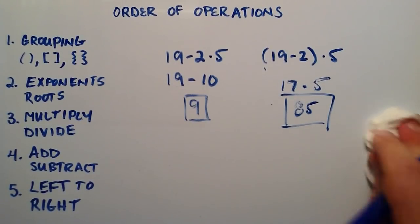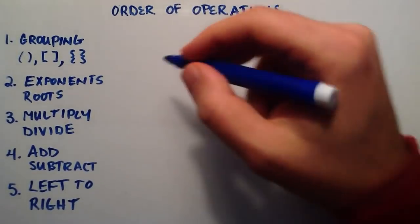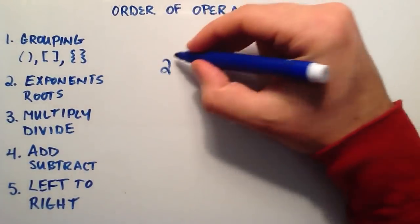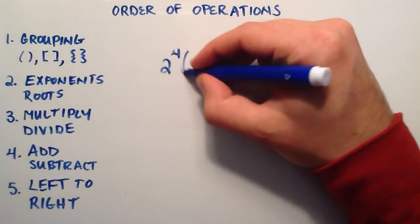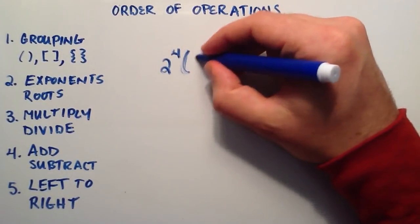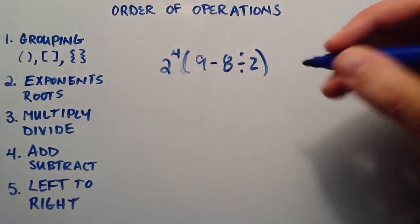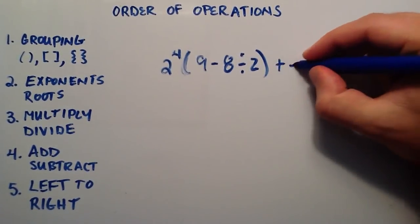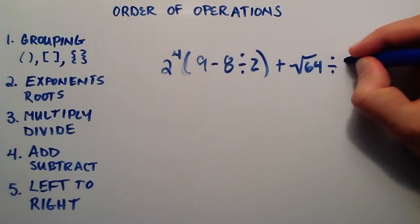So let's move on to another example here. This time we're going to put a bunch of stuff in here. We're going to do 2 to the 4th, and that's going to be multiplied by 9 minus 8, divided by 2, all inside parentheses. And then we're going to add that to the square root of 64, and divide by 2.